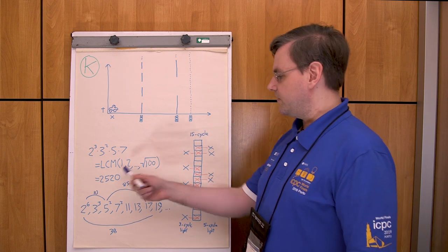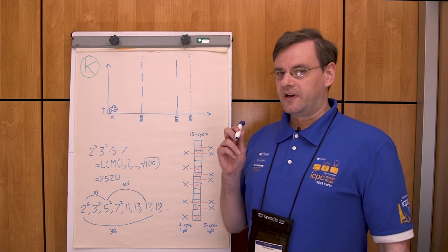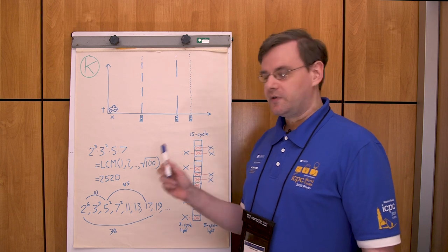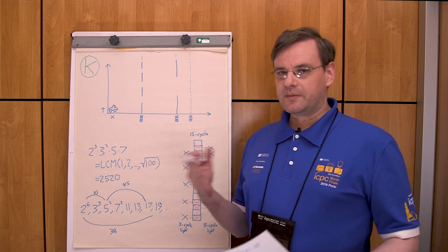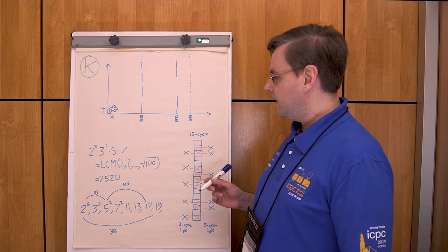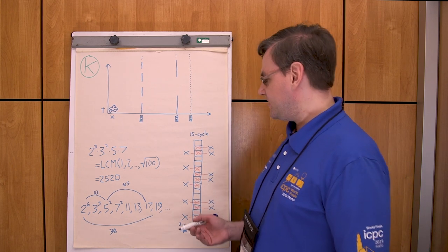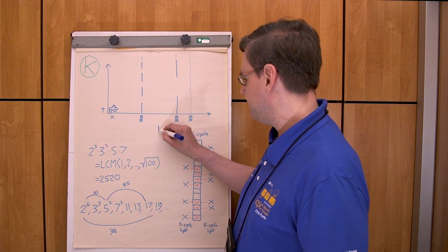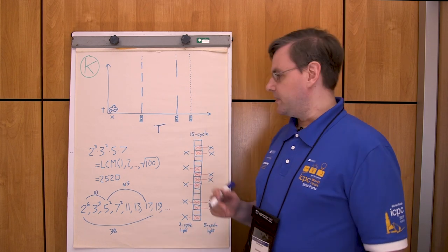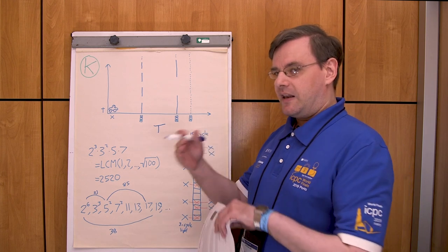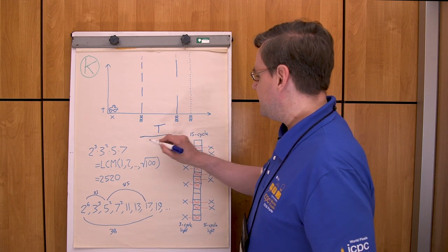This is a sub-problem. If you consider a light that has period t, then once you consider this sub-problem, the system of that light ends up having a period of t over gcd(t, 2520).